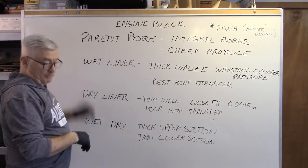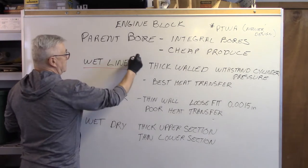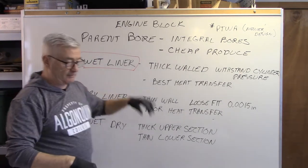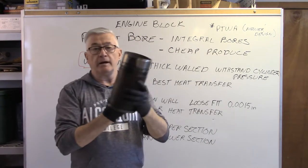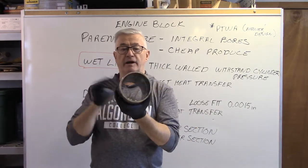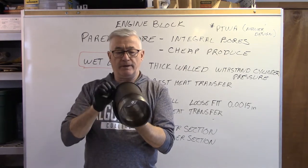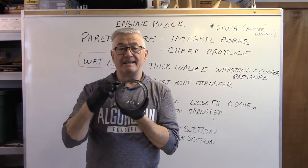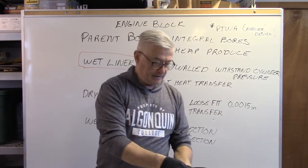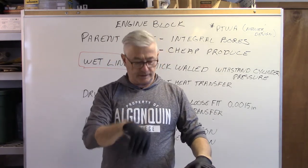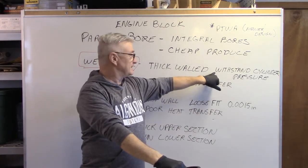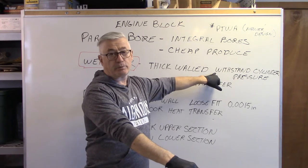By far the most common design out there is a wet liner. A wet liner is a very thick wall and I have a couple here and we'll look at them a little closer. This is a very thick, very heavy wall. The thickness of this wall extends the entire length of this liner. It isn't reduced at all. And the main design of that is that we need that thickness because that has to withstand the cylinder pressure.